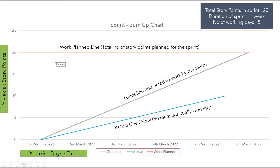As you can see, the sprint starts on 1st March 2022 and ends on 8th March 2022. 5th March and 6th March are not mentioned in the graph because they are Saturday and Sunday. The sprint burn up chart will have three lines: one is the guideline, which represents how the team is expected to work; another is the actual line, which represents how the team is actually working; and the work planned line, which represents the total number of story points planned for the sprint — in this case, 20 story points. The work planned line will never change unless there is a reduction or addition to the total number of story points.